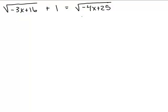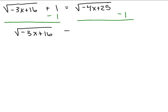All right, so here's the problem. So if I want to isolate this square root, the square root of negative 3X plus 16, I'm going to have to subtract one from both sides, which will give me square root of negative 3X plus 16 equals square root of negative 4X plus 25 minus 1.